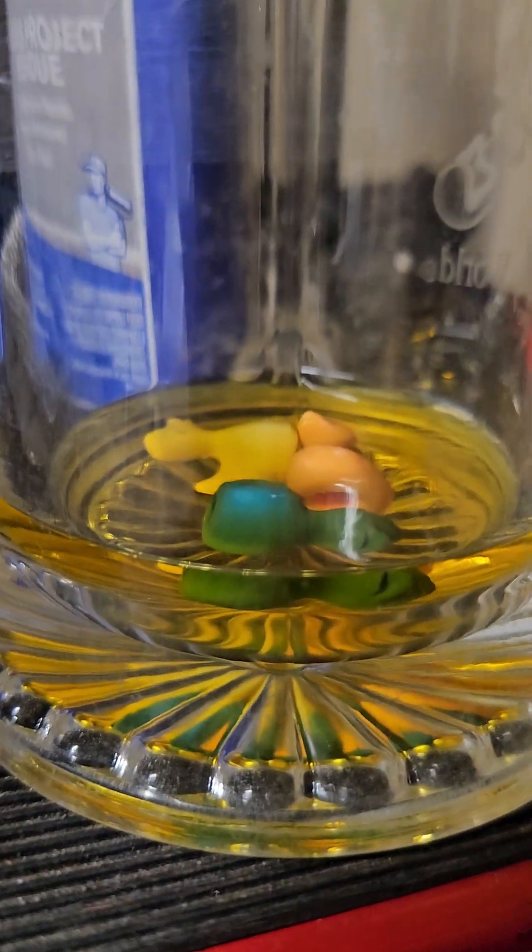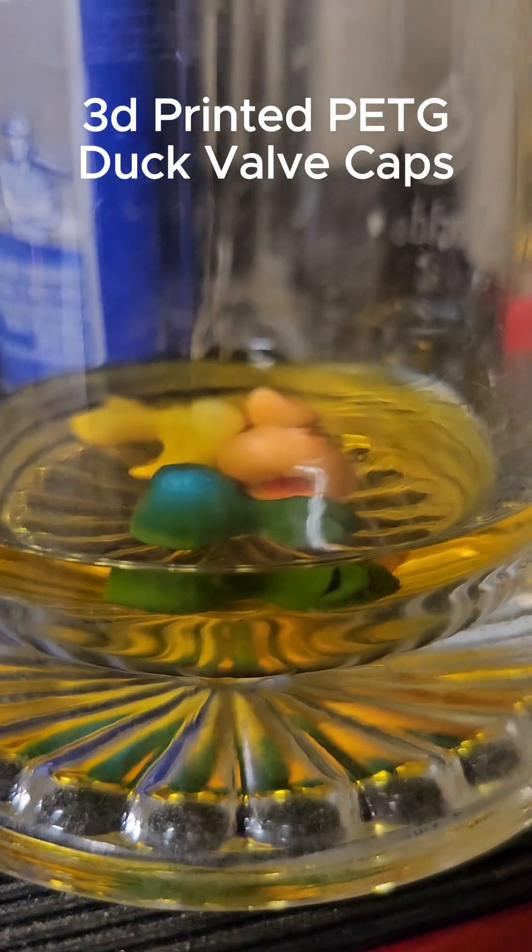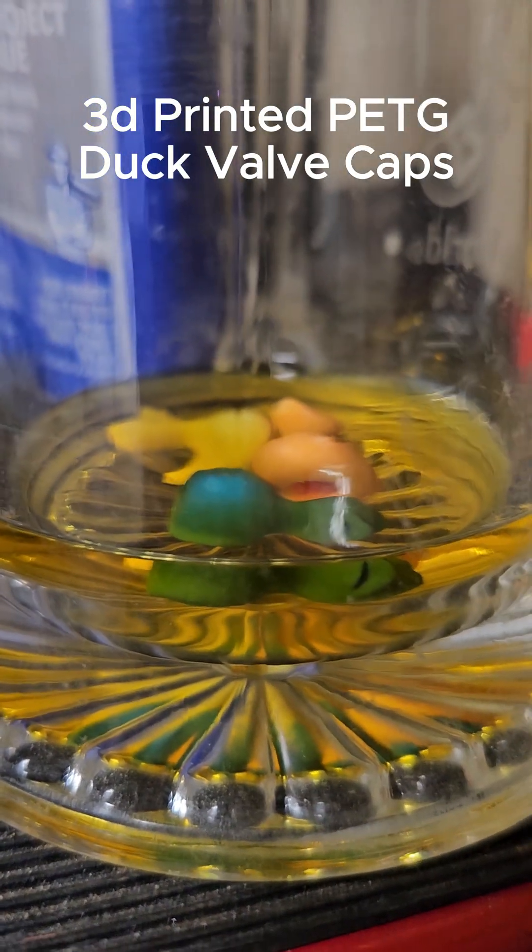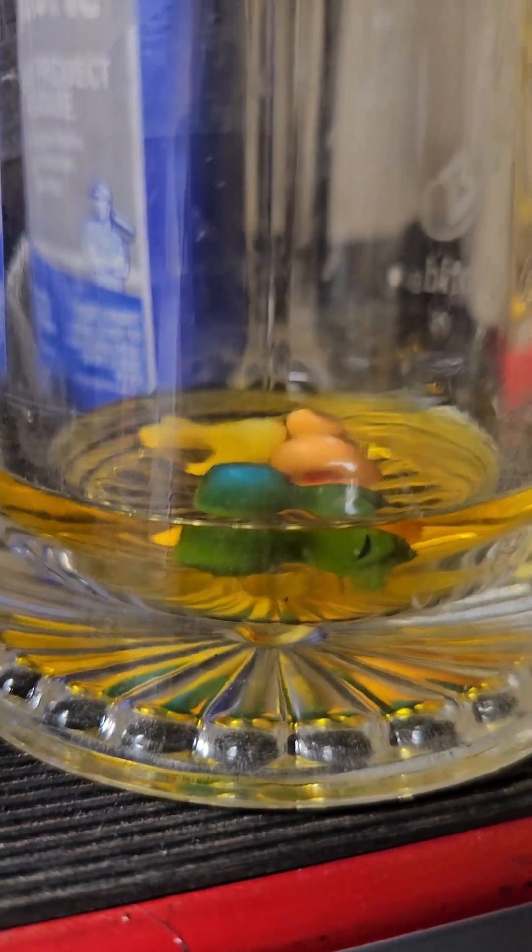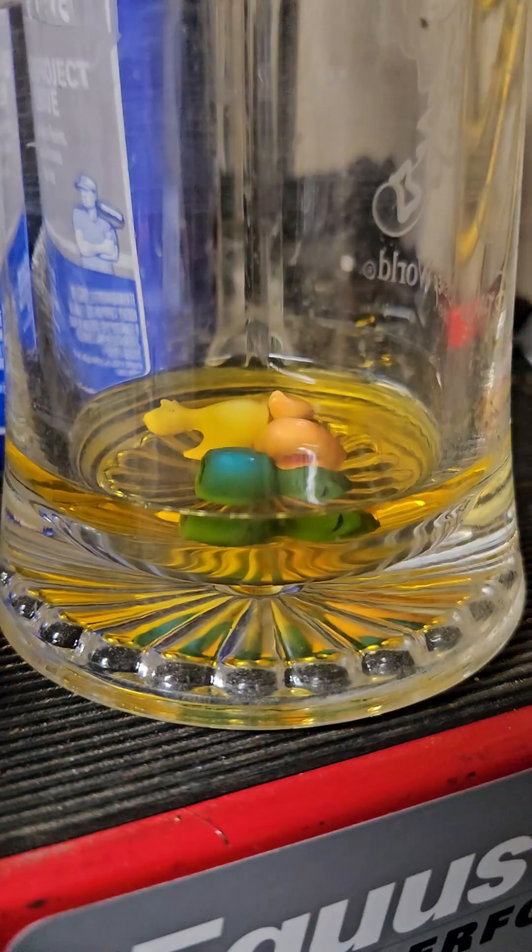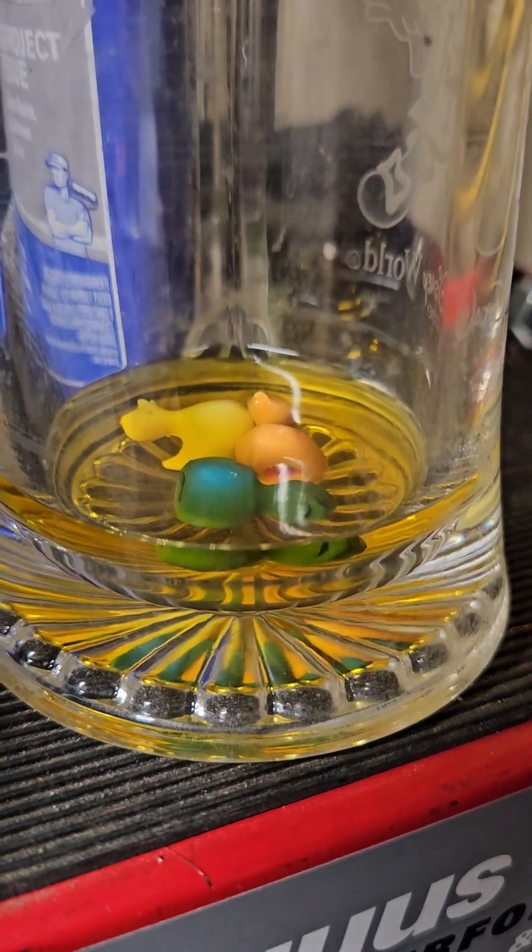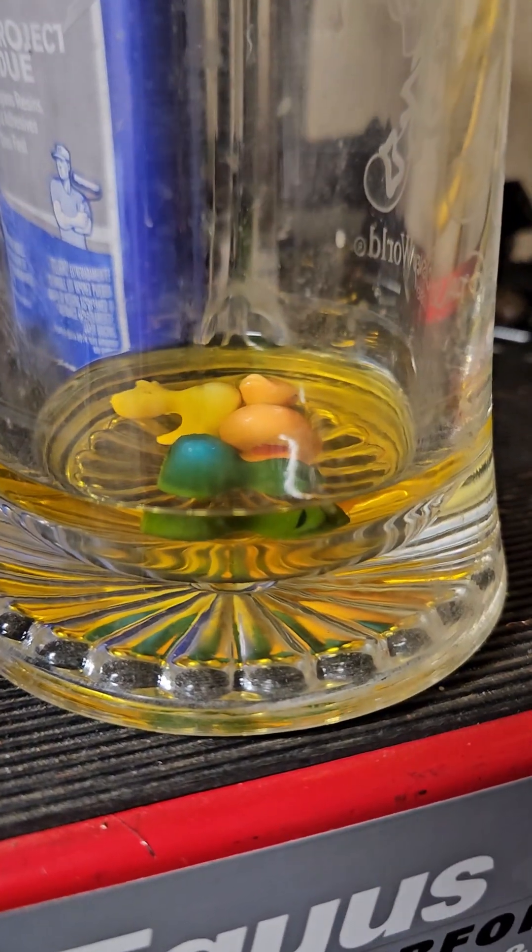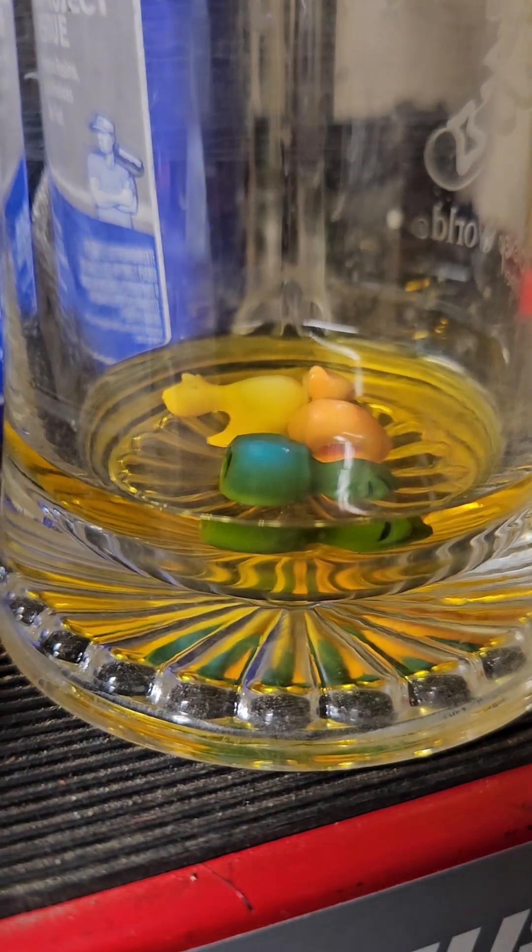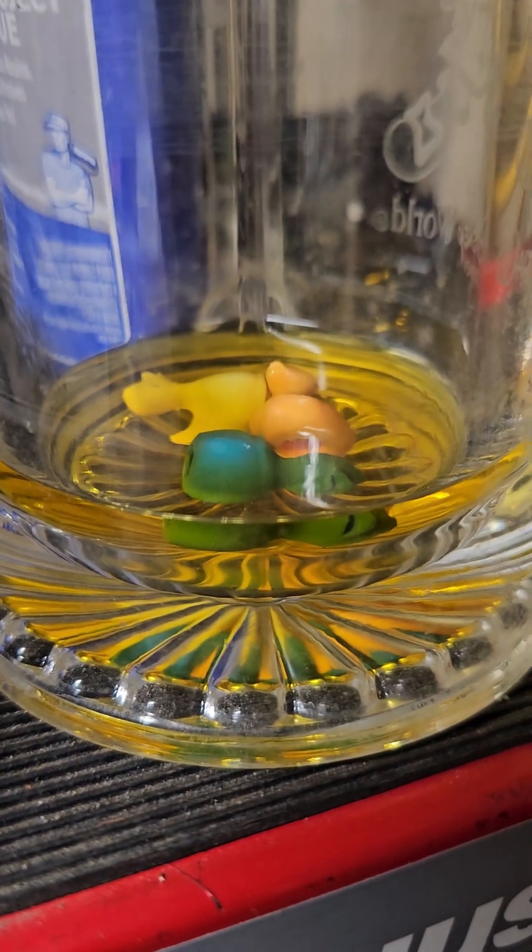So this is part 2 of my non-scientific testing if PETG will be weakened by soaking in acetone as stated by somebody on the internet. These ducks have been soaking for 36 hours approximately, so we're going to take them out and just do a quick hand-held stress test on them to see if they are weakened.